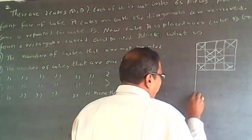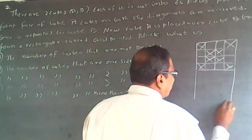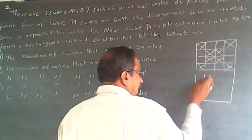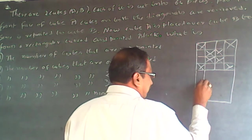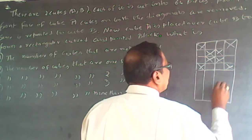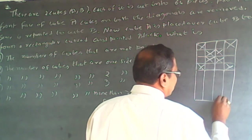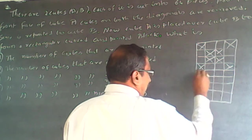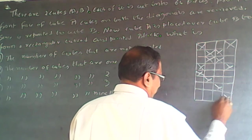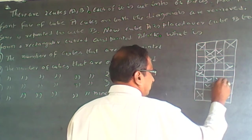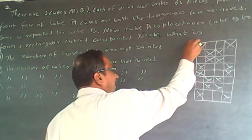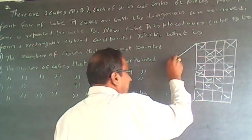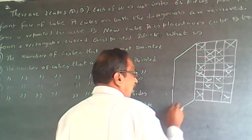The same thing is repeated with cube B. And one cube is being placed over the other. So the diagonals are being removed and then it becomes a rectangular cuboid — so extend or complete the cube.